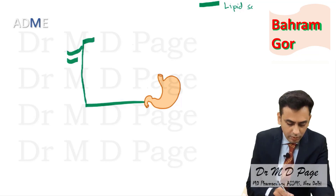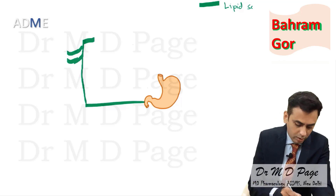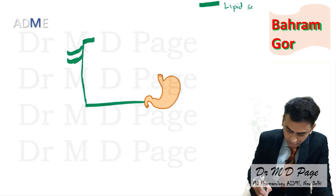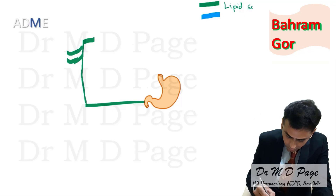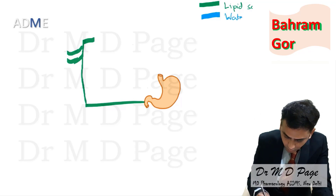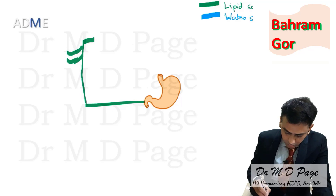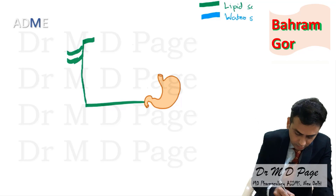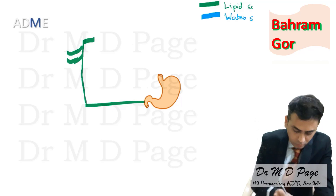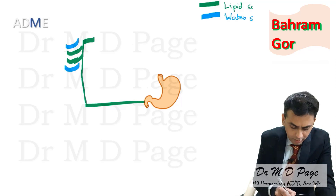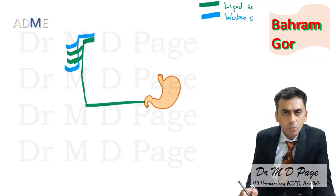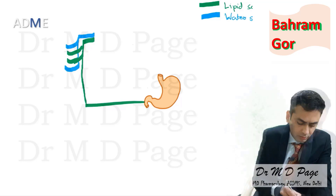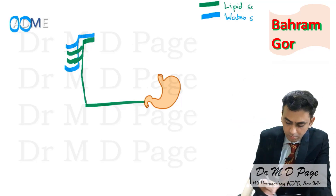Once the lipid soluble drug is absorbed, it reaches into systemic circulation — this is what absorption is. We can also have water soluble drugs; these water soluble drugs also gain entrance into systemic circulation by parenteral routes like subcutaneous, IM, or IV. Once into systemic circulation, we have finished with absorption.